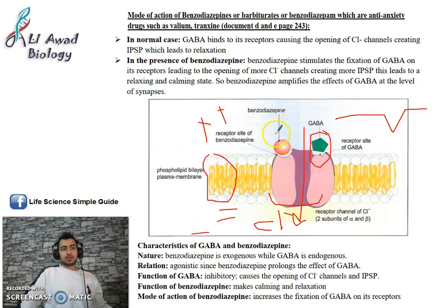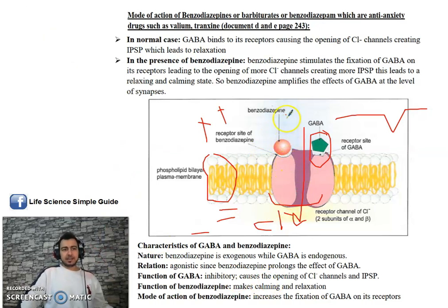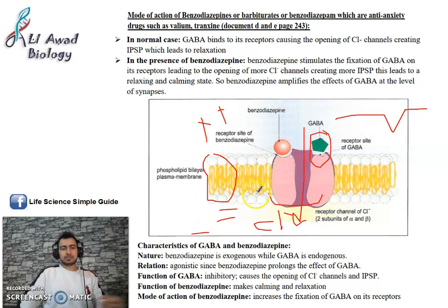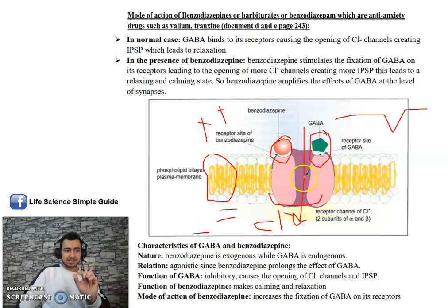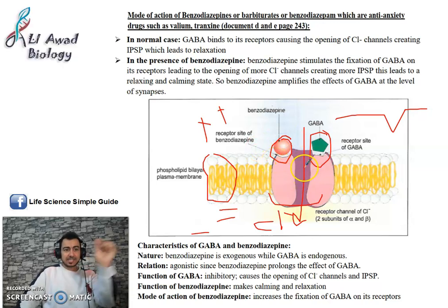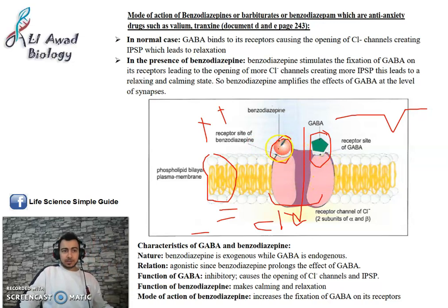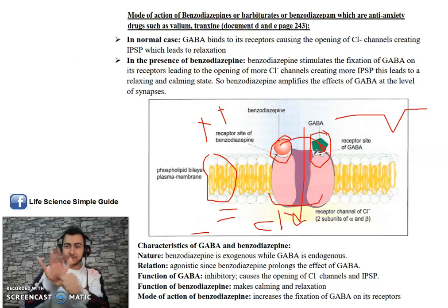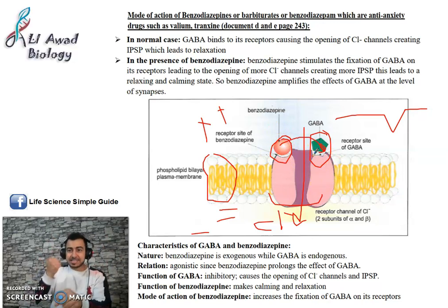This leads to hyperpolarization. GABA is a general inhibitor — it causes inhibition through hyperpolarization. Benzodiazepines, diazepam, or barbiturates all have the same meaning in this context. This drug has a site on the receptor of GABA. It binds there and prevents GABA from detaching from its receptor — it prevents the releasing of GABA from its receptors.